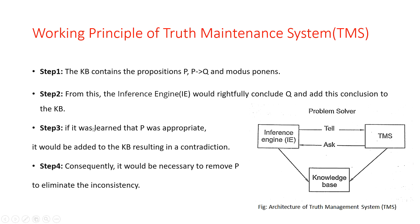Step three: if it was learned that P was not appropriate, it would be added to the knowledge base resulting in a contradiction. Step four: consequently, it would be necessary to remove P to eliminate the inconsistency. So in this working of the truth maintenance system, if P is true and P implies Q is true, we conclude Q is true — but here we are removing P and maintaining consistency. This is the working of the truth maintenance system. Thank you.